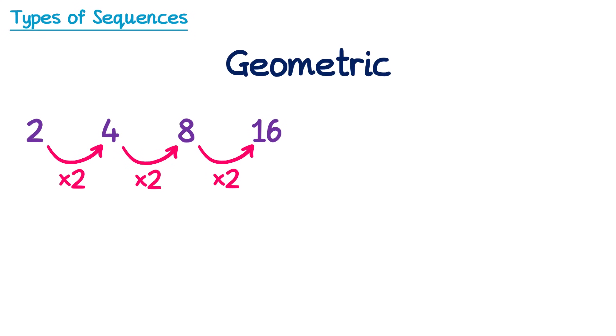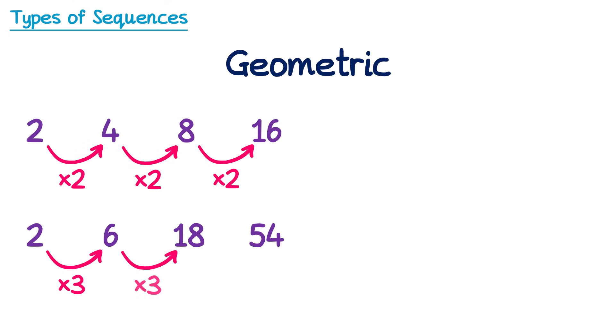In a geometric sequence, to get from one term to the next, we multiply rather than add or subtract. So to get from 2 to 4, we multiply by 2; from 4 to 8, we multiply by 2; and 8 to 16, we also multiply by 2. So if we always multiply by the same number from one term to the next, we call this a geometric sequence. For this next one, to get from 2 to 6 you multiply by 3, 6 to 18 by 3, and 18 to 54 by 3 — so this one is geometric as well.